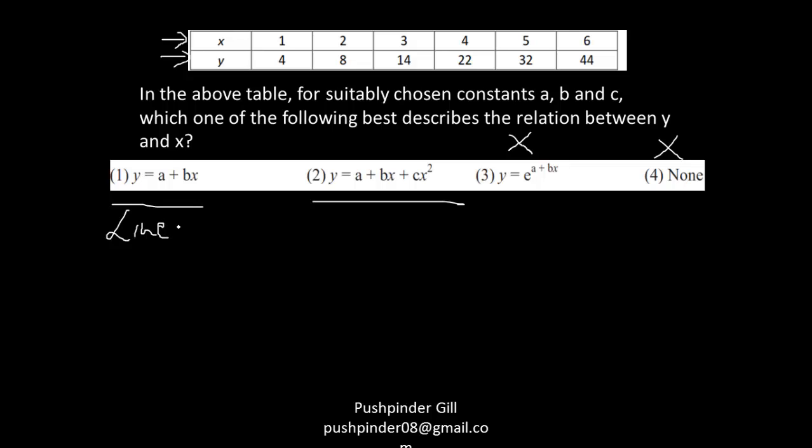So it's a linear equation wherein it increases by a certain amount every time. But if you see it's becoming 4 and 8 and it's becoming 14, then 22, then 32, then 44. I get a feeling that it's not a linear equation. Let me go ahead and try this.